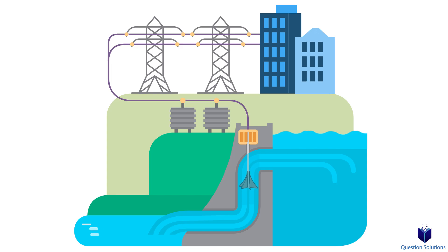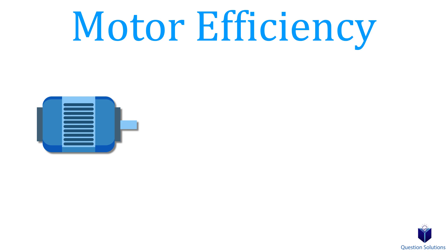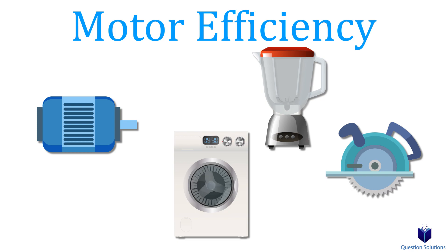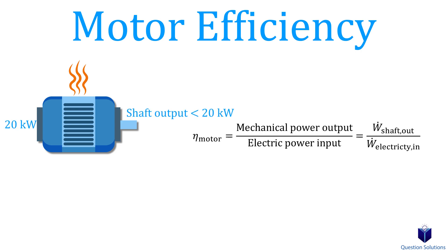Next, let's talk about electrical motors. Electrical energy can be converted to rotating mechanical energy — things like circular saws, blenders, and washing machines all have motors. The conversion of electrical energy to mechanical energy is not perfect, so we define motor efficiency with its equation. When a motor receives electrical energy input, not 100% is transferred out as mechanical energy — due to friction, some energy is lost as heat.